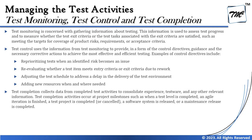When it comes to test control, it uses information from test monitoring to provide control directives, guidance, and the necessary corrective actions to achieve the most effective and efficient testing. Examples of control directives include: reprioritizing tests when an identified risk occurs, re-evaluating whether a test item meets entry or exit criteria due to rework, and adjusting the test schedule to address a delay in delivery of the test environment, or adding new resources when needed. In reality, these control actions would be very specific to the deviations observed.